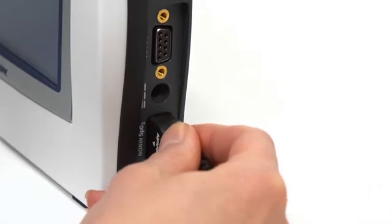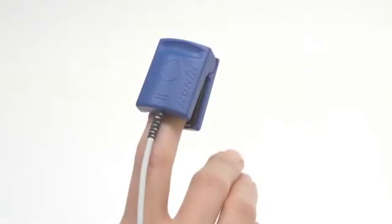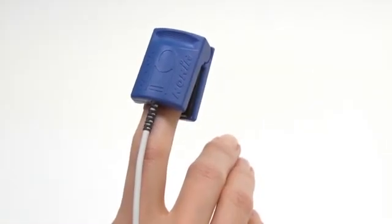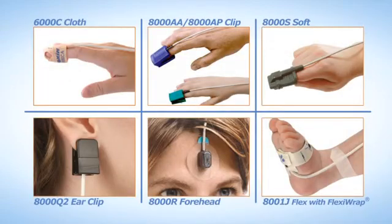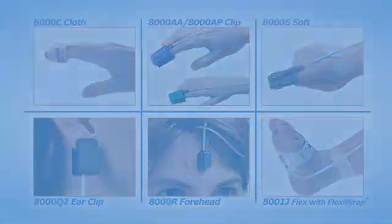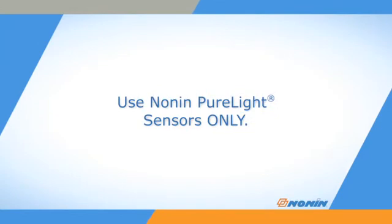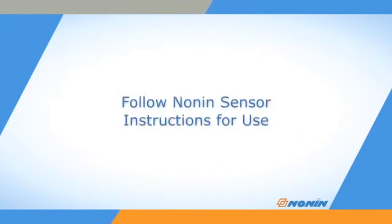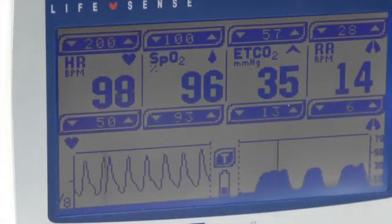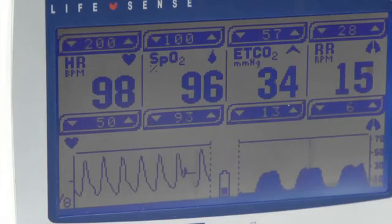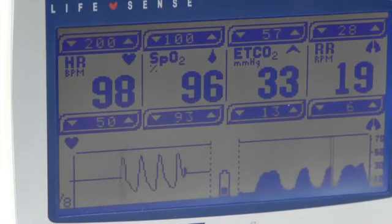The LifeSense Capnography and Pulse Oximetry Monitor has a cable connector on the right side to attach a Nonin PureLight brand SpO2 sensor. The LifeSense monitor is designed for use with Nonin brand sensors only — do not use it with other brand sensors, and follow the sensor instructions for proper placement and care. SpO2 and pulse rate display on the left side of the screen along with the ET-CO2 and respiration data.